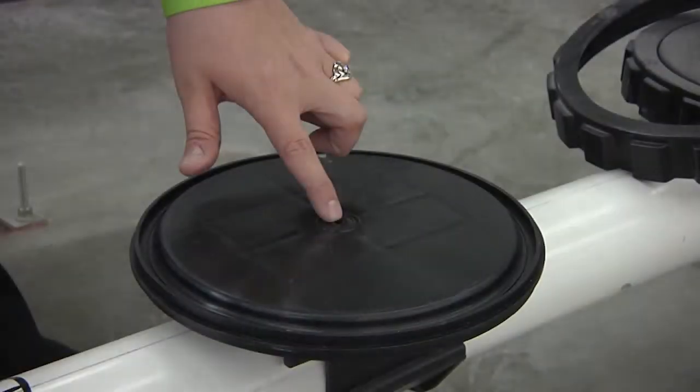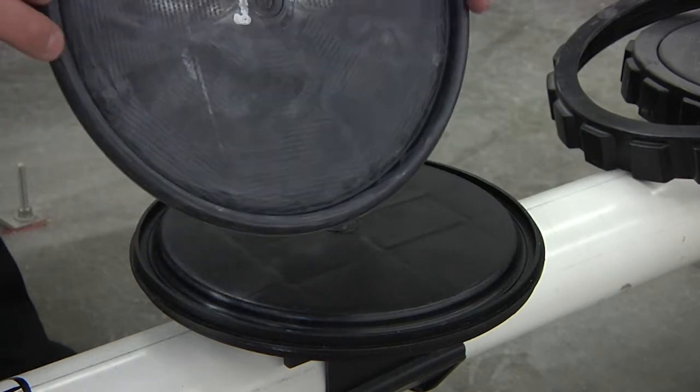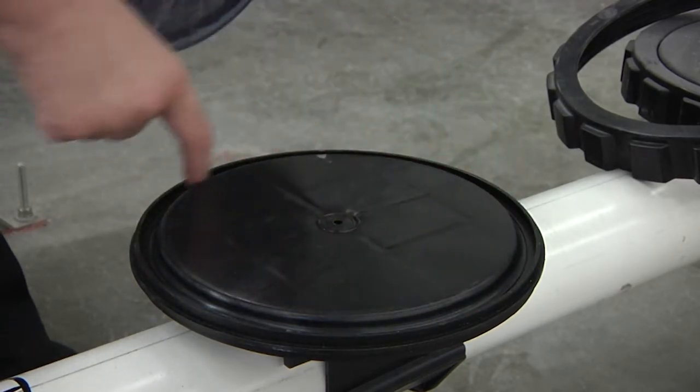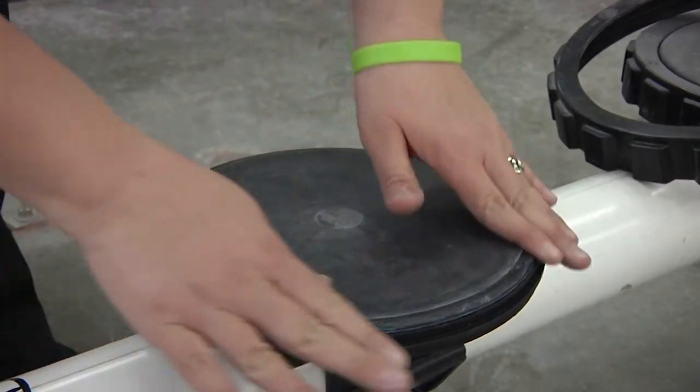Close inspection will show the perforation holes in the disk. The disk has a non-perforated area in the middle that covers the air outlet hole on the diffuser. It also has a bead around the edge that fits into the groove around the diffuser assembly.